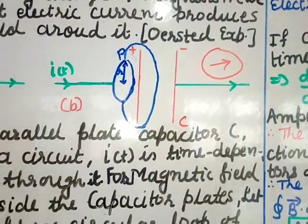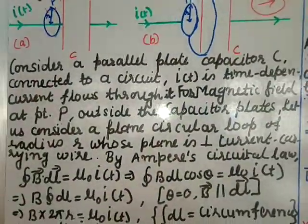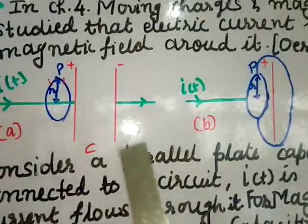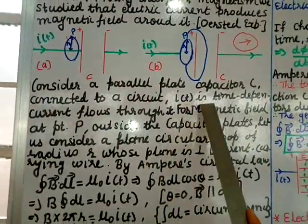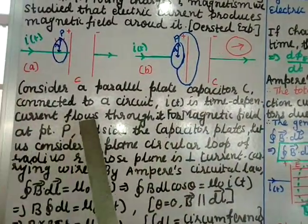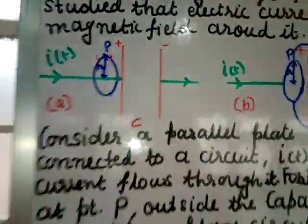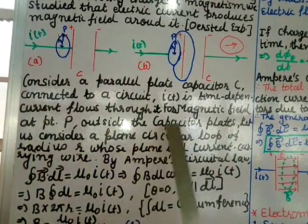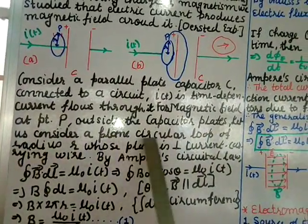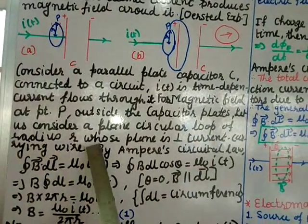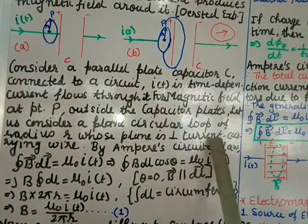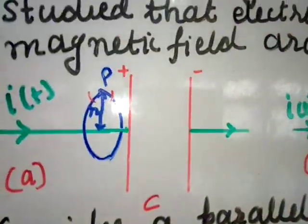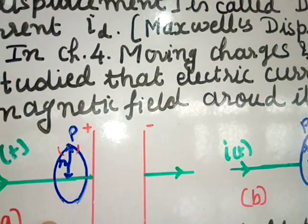Consider a parallel plate capacitor C connected to a circuit. A time-dependent current i(t) flows through it. Our aim is to find the magnetic field at point P, which is just outside the capacitor. We consider a plane circular loop of radius r whose plane is perpendicular to the current-carrying wire.